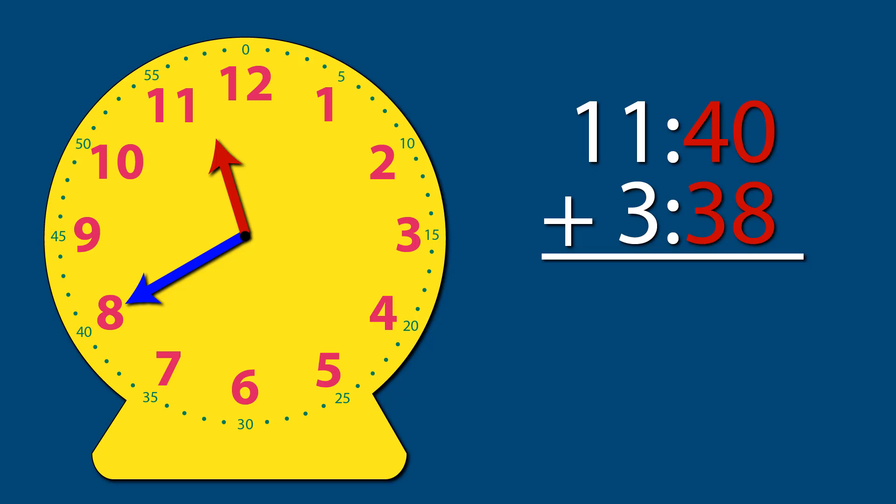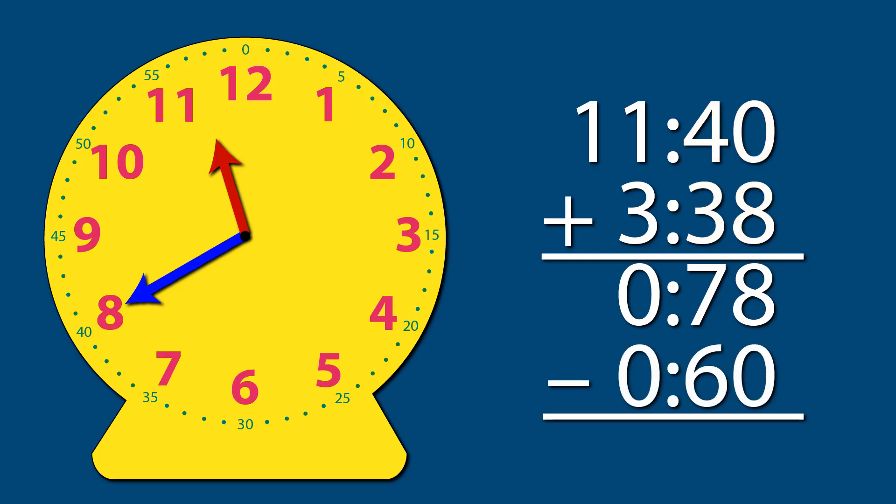The first step is to add 38 minutes to 40 minutes. This gives you 78 minutes. Remember, there are only 60 minutes in an hour. When you subtract 60 minutes from 78, you get 18 minutes remaining.